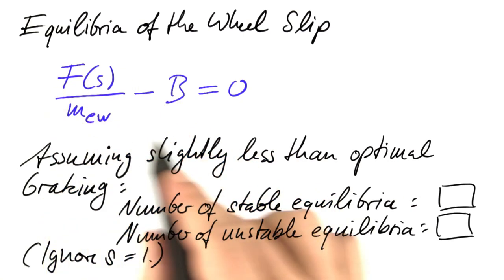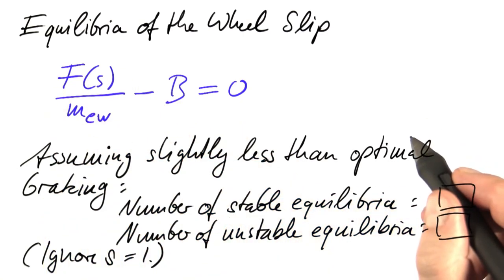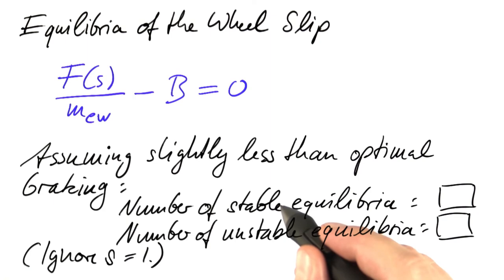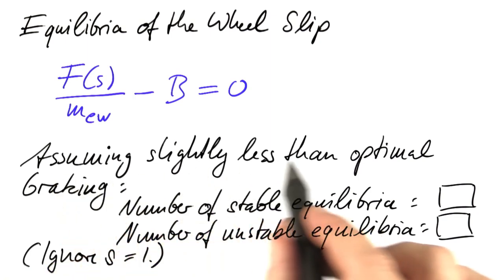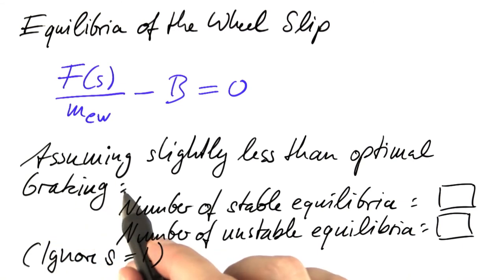Given this equation, the task is now to determine the number of equilibria, the number of stable equilibria and the number of unstable equilibria. For that, assume that the car is braking slightly below the optimum value and ignore the case that s, the wheel slip, equals 1, which means perfect locking.